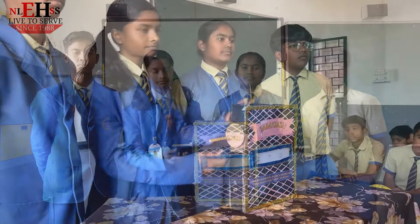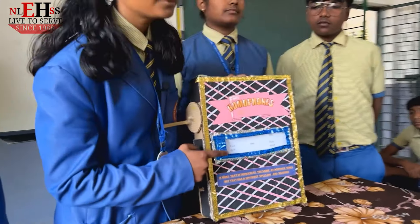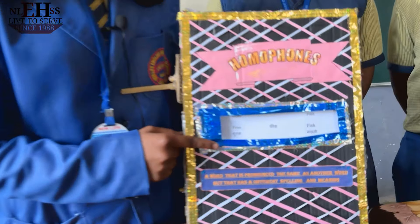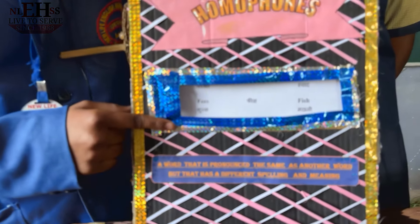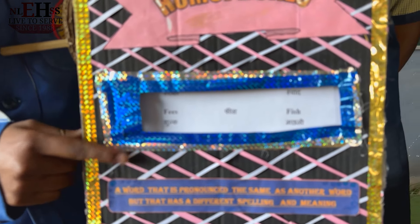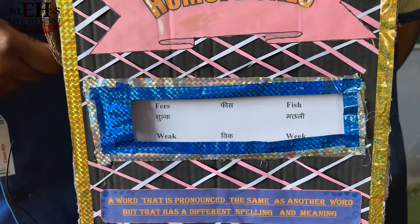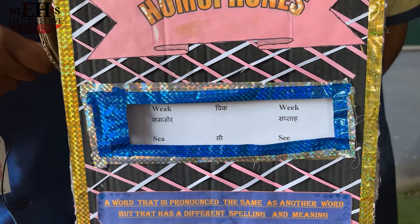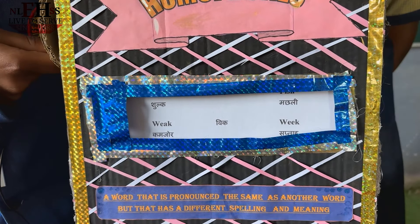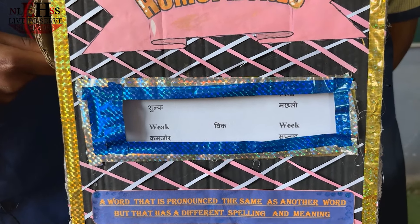First, A. 'A' is used before a noun that begins with a consonant sound. 'An' is used before nouns that begin with a vowel sound. And 'The' is used before a noun when we want to make it particular.